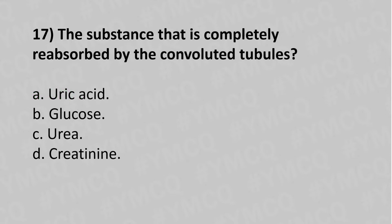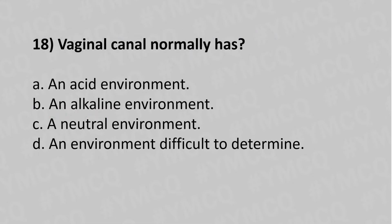Now let's move to question number seventeen: The substance that is completely reabsorbed by the convoluted tubules is which of the following? Option A: uric acid. Option B: glucose. Option C: urea. Option D: creatine. The answer is Option B: glucose.